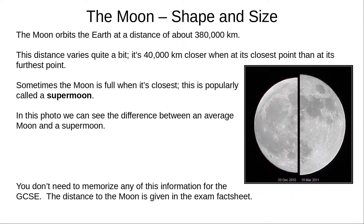The Moon orbits the Earth at about 380,000 kilometres. The distance varies by about 4,000 kilometres, bringing it quite a bit closer than average every month. When the Moon is closest at the same time as a full Moon, this is called a supermoon. Newsrooms love to make a big deal of this, but it only looks about 7% bigger than average. You don't need to memorise the distance to the Moon — it's on the exam fact sheet.